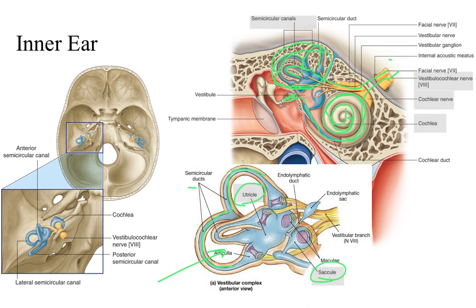The saccule and utricle are responsible for determining your static balance and where you are in space without movement, helping you maintain normal equilibrium or balance.